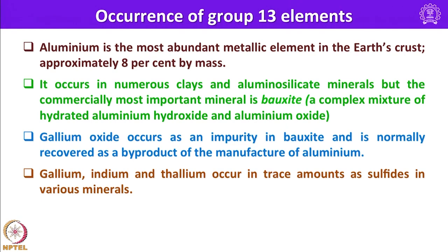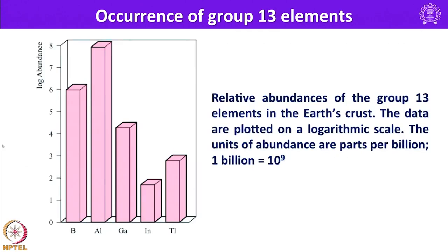Gallium, indium and thallium occur in trace amounts as sulfides in various other minerals. You can see here the relative abundance of group 13 elements is given here. It shows the most abundant among them is aluminum, next boron comes and next gallium comes, and indium is in small quantity compared to thallium.